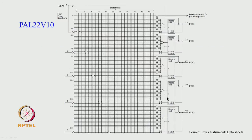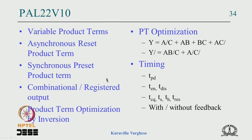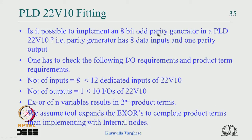We have seen the 22V10 structure — the macro cell and its summary: variable product terms, asynchronous reset product term, synchronous preset product term. You can choose combinational or registered output, and choose an inversion at the output of the combinational or registered section to apply De Morgan's theorem and optimize the number of product terms. Basic timing details include combinational propagation delay, flip-flop timing, and feedback — with feedback an extra time delay is added to the array because of input delay.